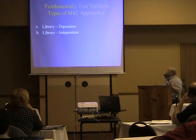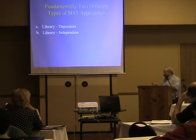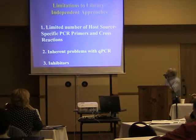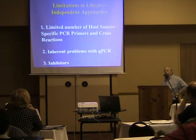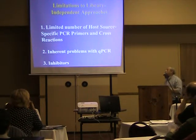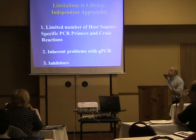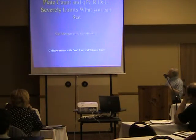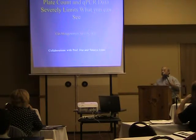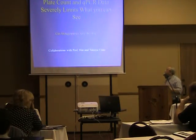We've heard a lot about library-dependent and library-independent methods. I want to describe another type of microbial source tracking developed over the last several years in collaboration with colleagues in Korea. We know there are limitations to both library-dependent and library-independent methods, including inherent problems with qPCR — the presence of inhibitors and a limited number of host-source-specific DNA markers. Plate count and qPCR data severely limit what we can see. The question we asked was: can metagenomics save the day?